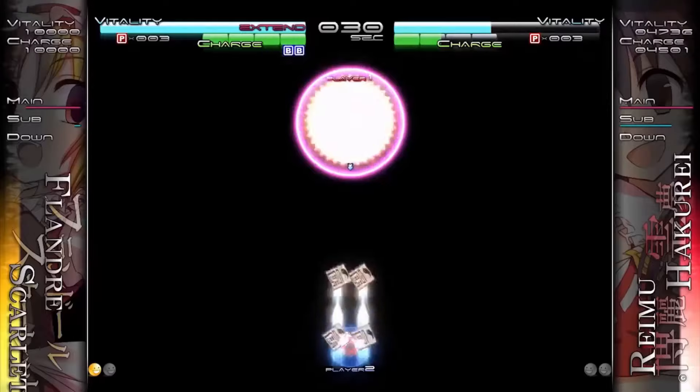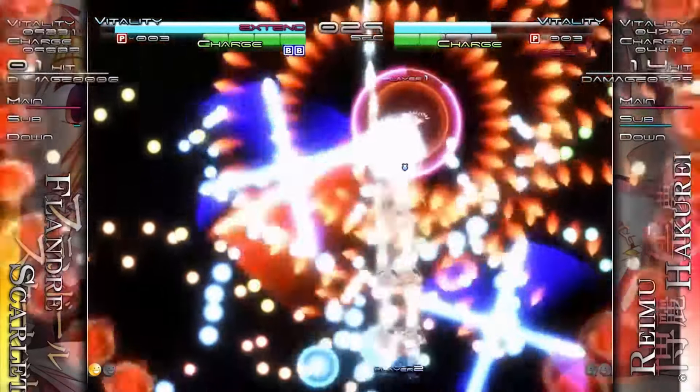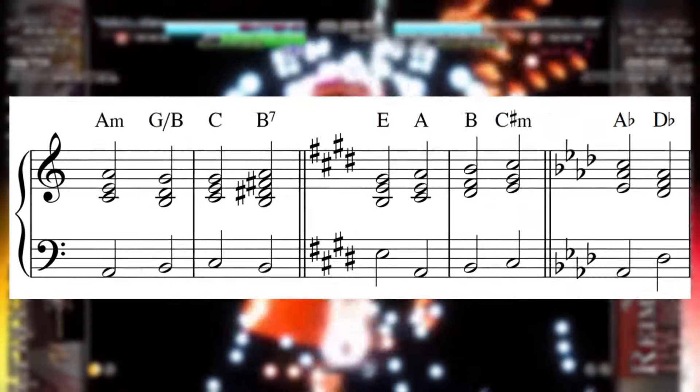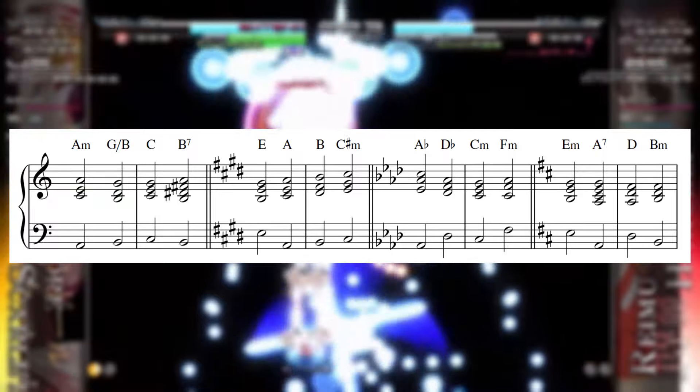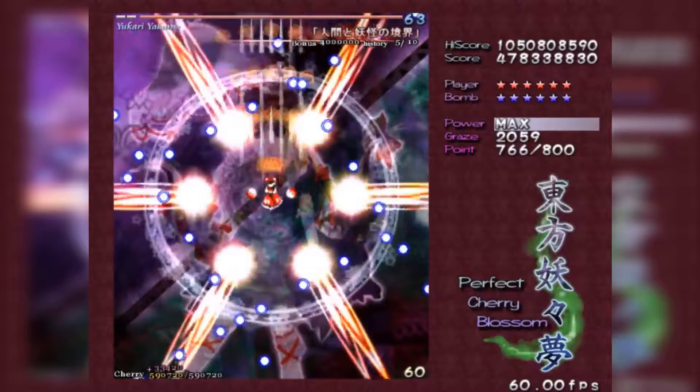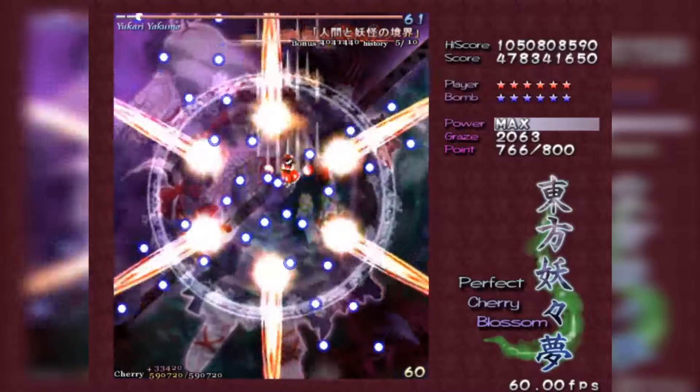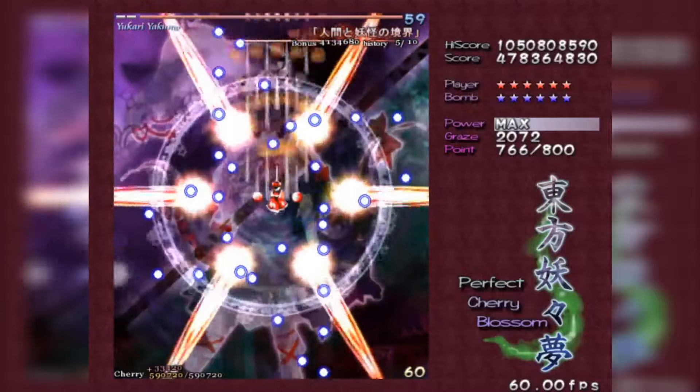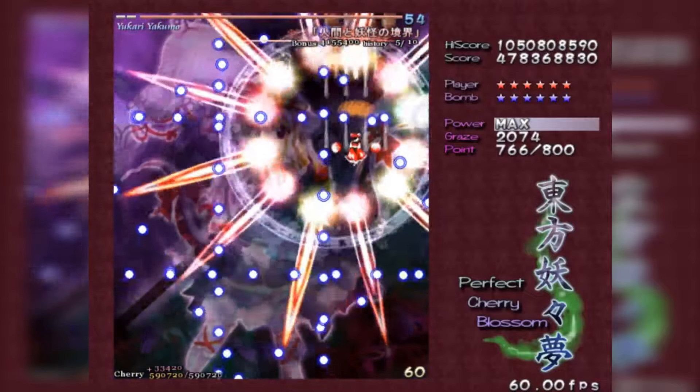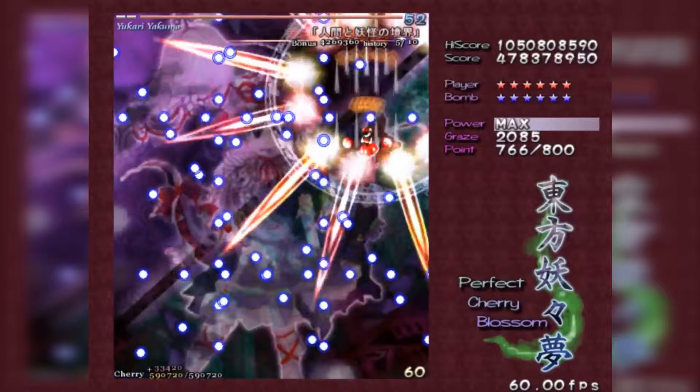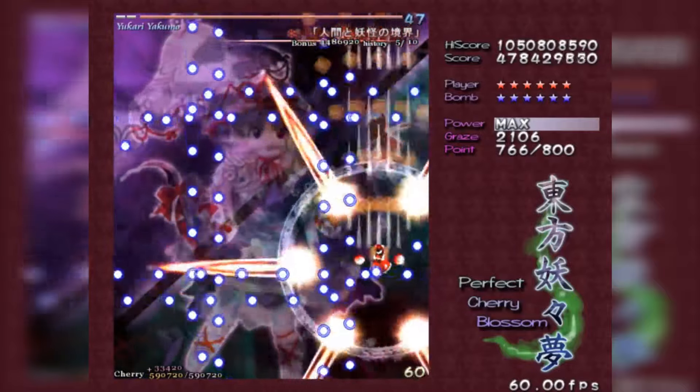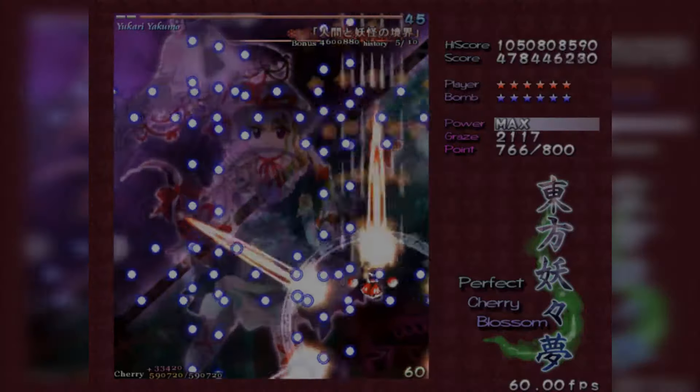One element that might be less obvious is the frequent use of key changes. Most tunes will change key at least a couple of times, with some moving through 4 or 5 different keys before finishing out their loop. These key changes do a lot to shape the emotional arc of each piece of music. Each point of climax or sudden twist or dramatic emotional shift is almost always accompanied by a change of key, and modulations both augment the effect of these individual moments as well as help shape the structure of each tune as a whole.